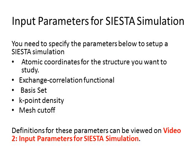Now you already have some general ideas about the basic concepts of quantum mechanical simulations and the SIESTA code. The parameters you need to specify to set up a SIESTA simulation include atomic coordinates for the structure you want to study, exchange-correlation functional, basis function, k-point density, and mesh cutoff. The definitions for all these parameters can be viewed in video number 2: input parameters for SIESTA simulation.